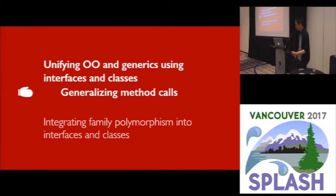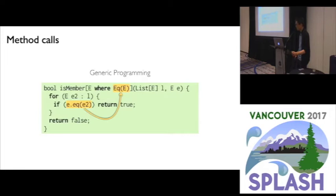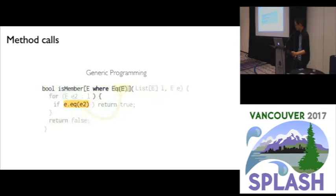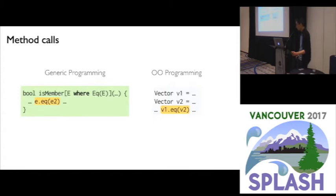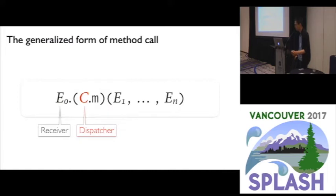IsMember is a generic method that tests if an element E is in a list L. A highlighted method call enabled by a WHERE clause constraint is one form, and a typical object-oriented dynamically-dispatched method call is another. Both of these method calls are special cases of a more general form of method calling in Familia, which takes an extra class C — the dispatcher. E0 is the receiver, M is the method name, and E1 to EN are the other arguments.